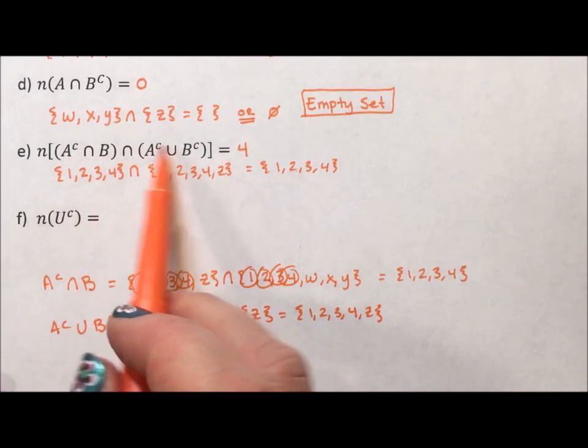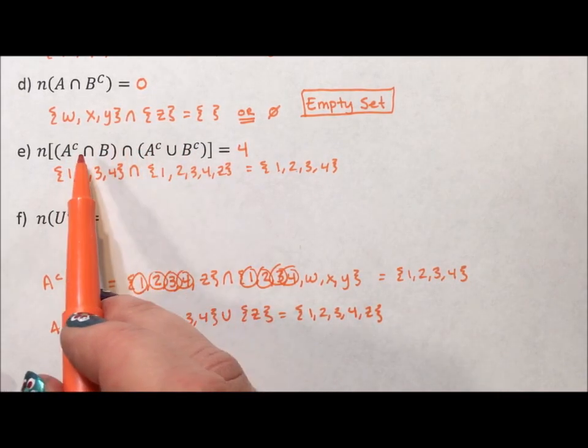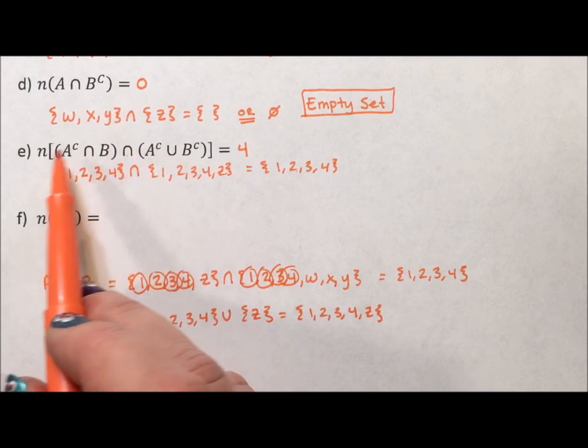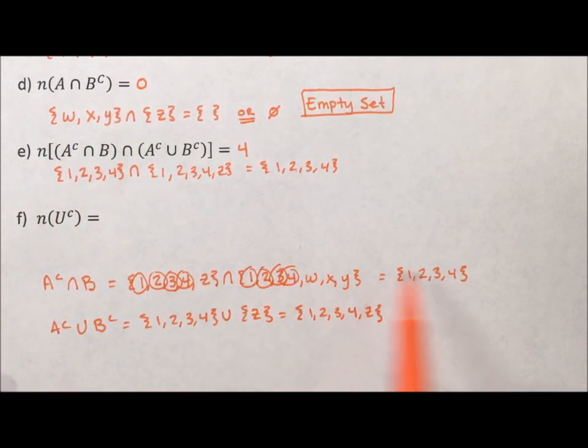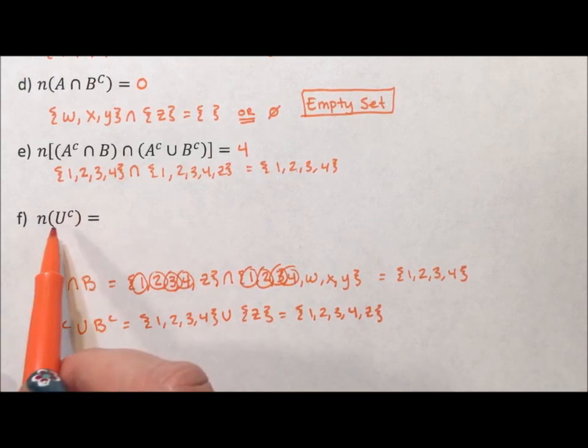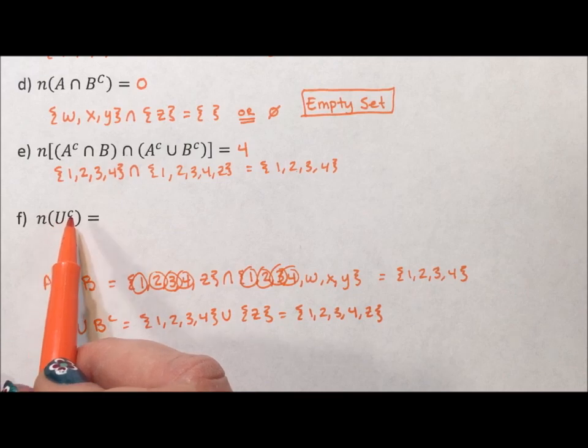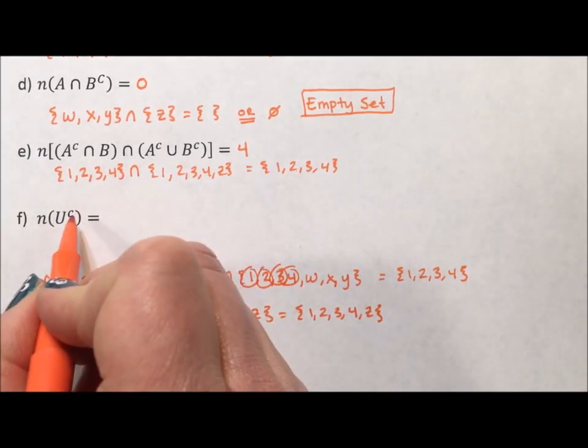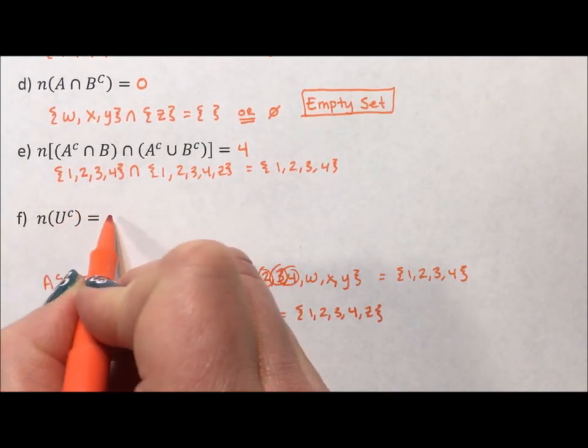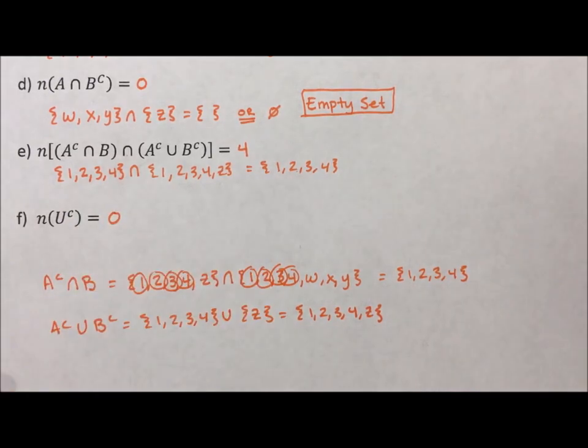So, this looks pretty overwhelming. There's a lot of union and intersection and complements, but if you just do it step by step, it is not too bad. Now, this last one is kind of fun. The union is everything. So the complement of everything is nothing. So if the union has eight elements, the complement has zero elements.